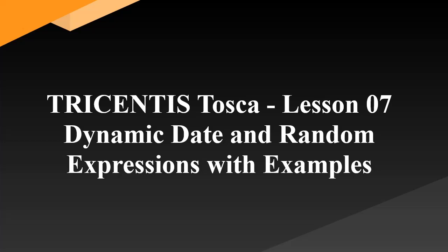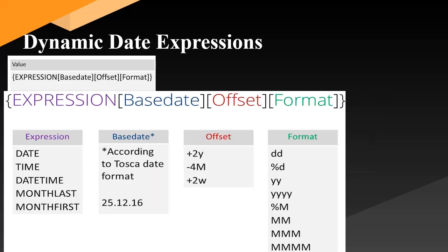Hi everyone, this is Ravi, welcome back to my YouTube channel. This is lesson seven on Tricentis Tosca automation tool. In this session I'm going to cover topics like dynamic date expressions and random expressions with some examples in the task automation tool. Stay tuned, please subscribe to my channel and click on the bell icon so that you will receive notifications for the next lessons.